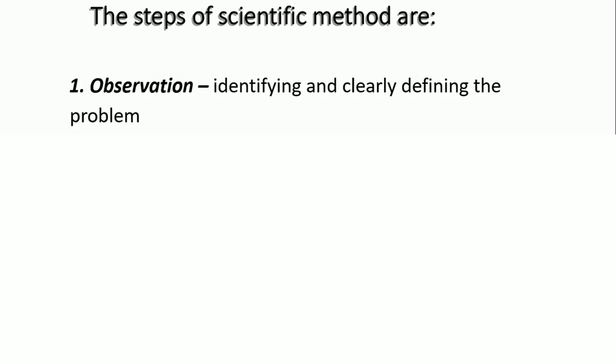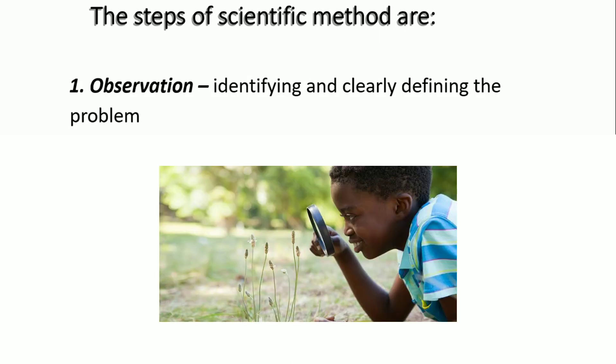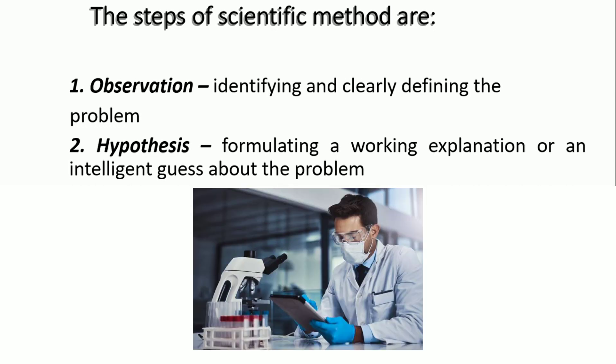What are the steps of the scientific method? First, you need to do the observation — you need to identify and clearly define the problem, such as what certain phenomenon is happening in a natural setting. Next, you need to hypothesize — formulating a working explanation or an intelligent guess about the problem.